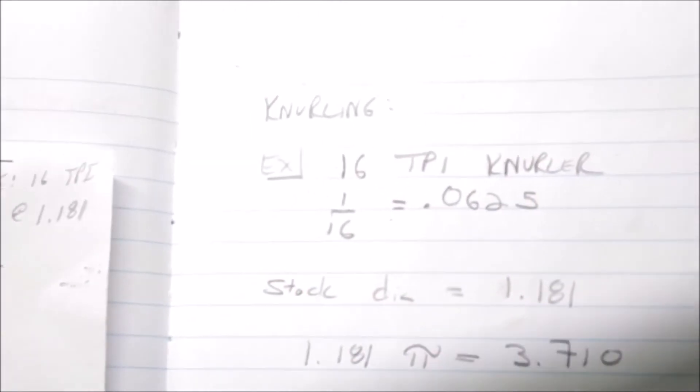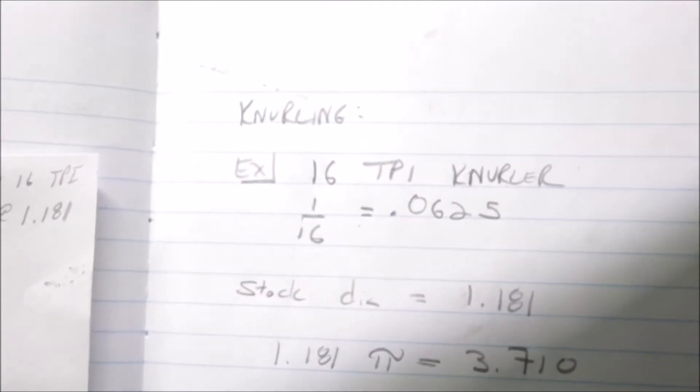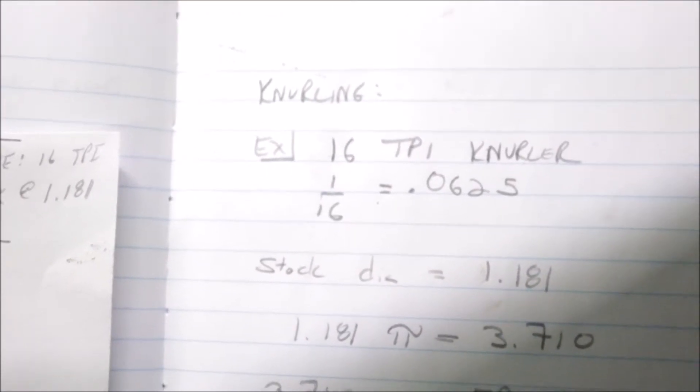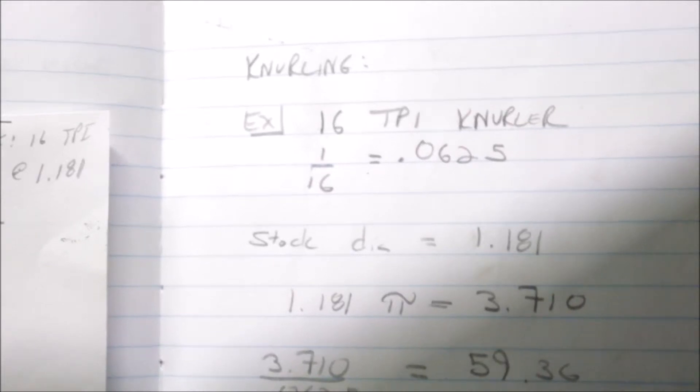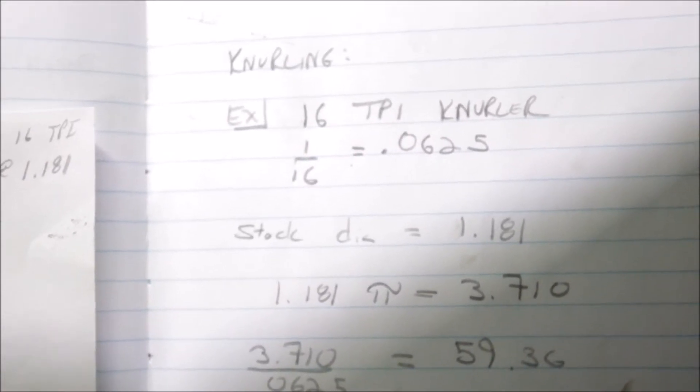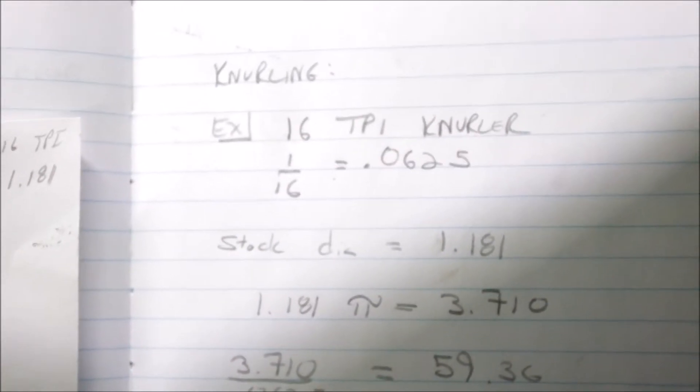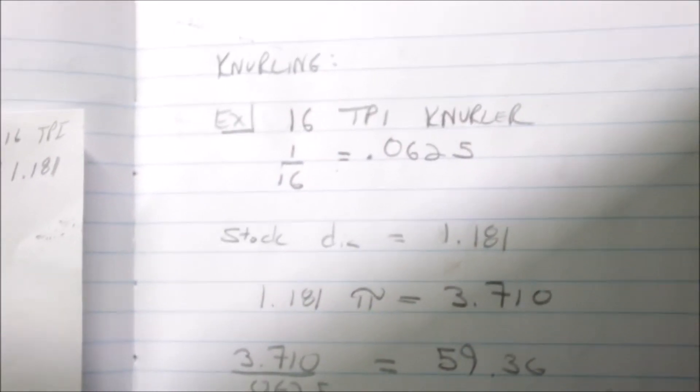So here we go, the Ox Tool Company Tom method. Once you have your teeth per inch, divide one by that number to get the length of each tooth, I guess you should say.